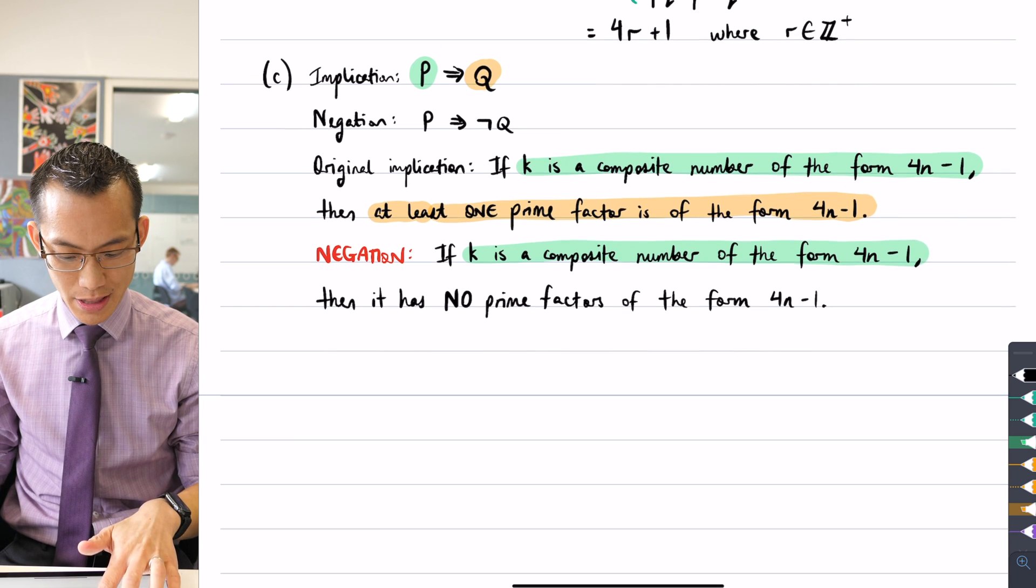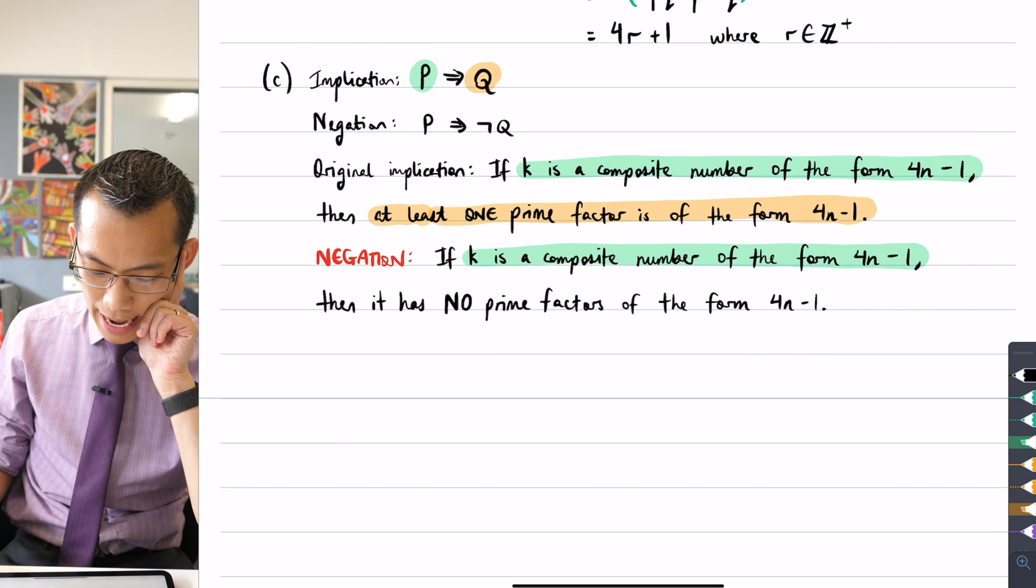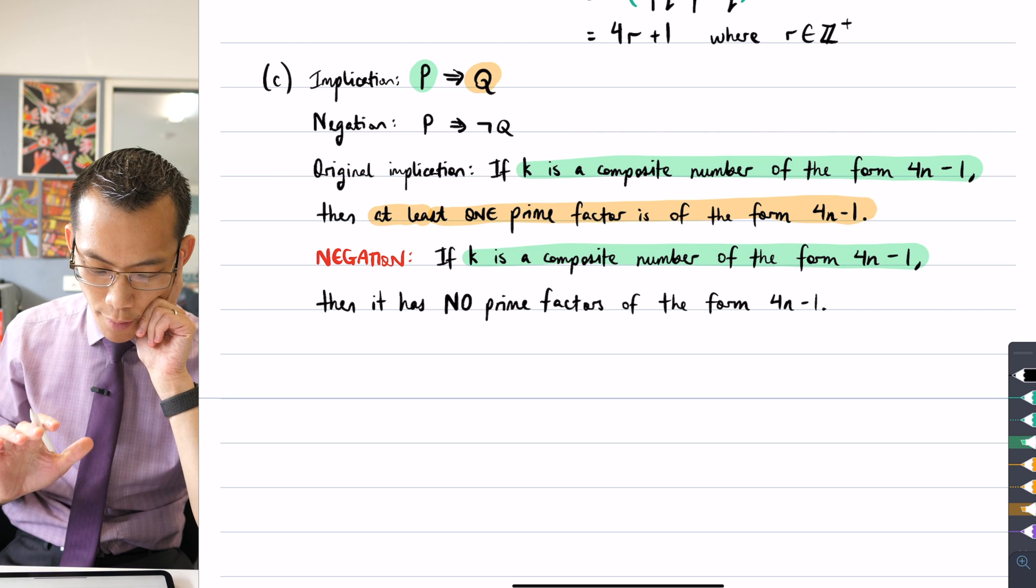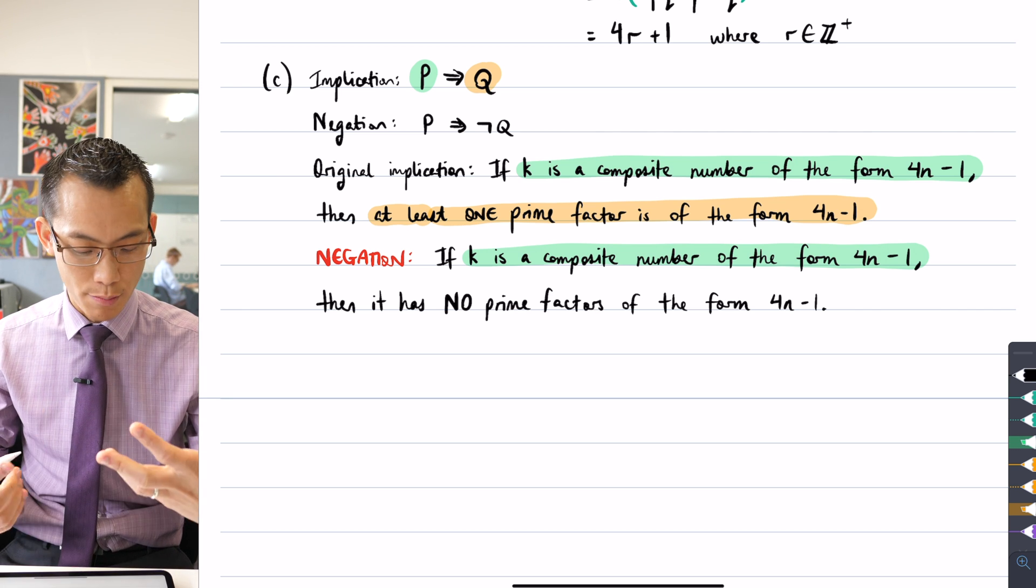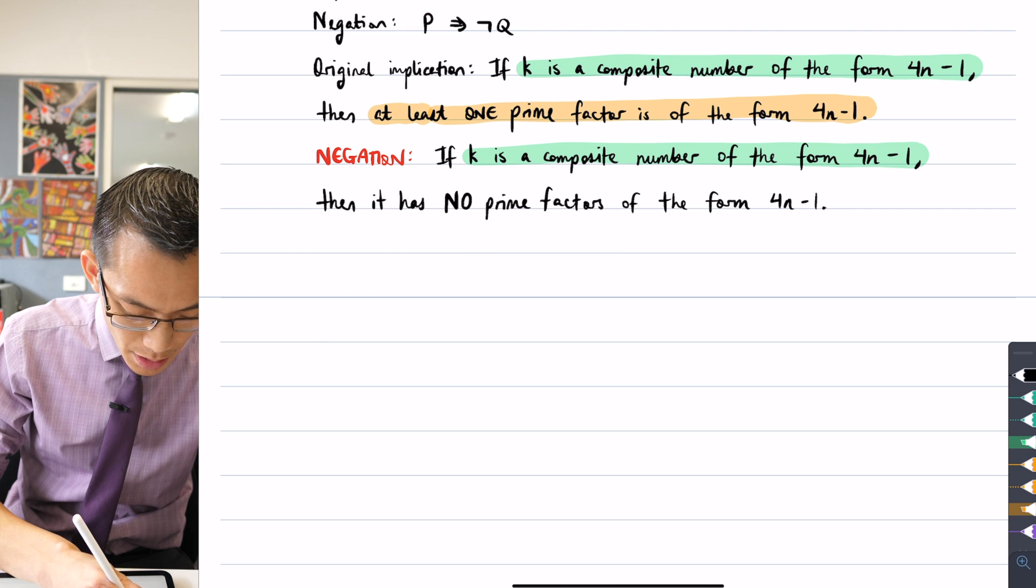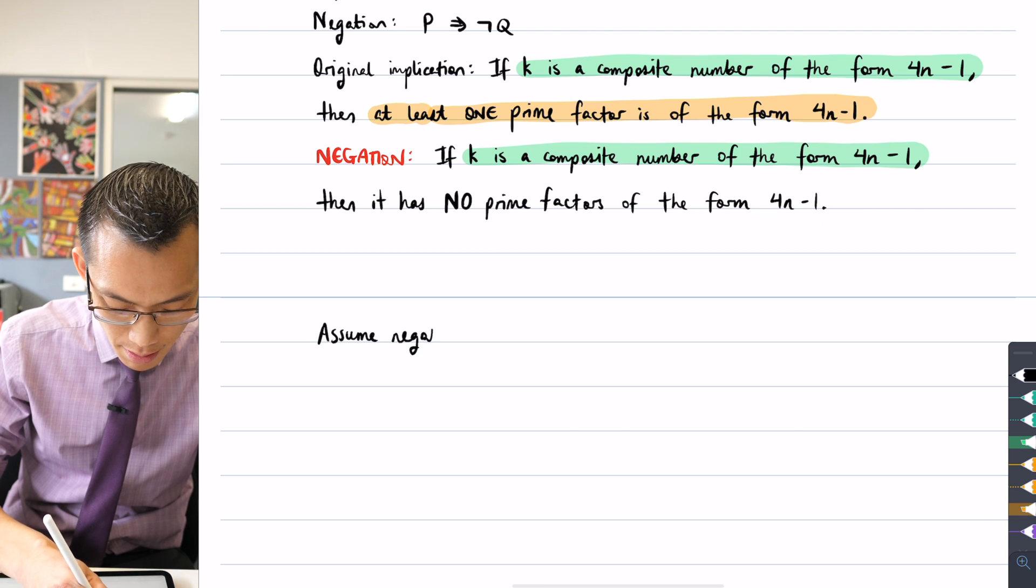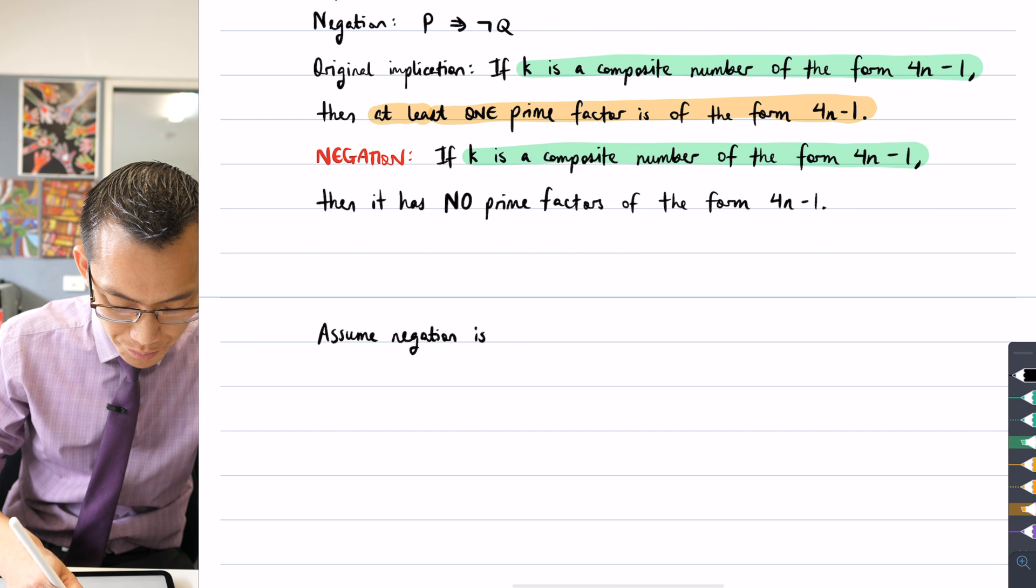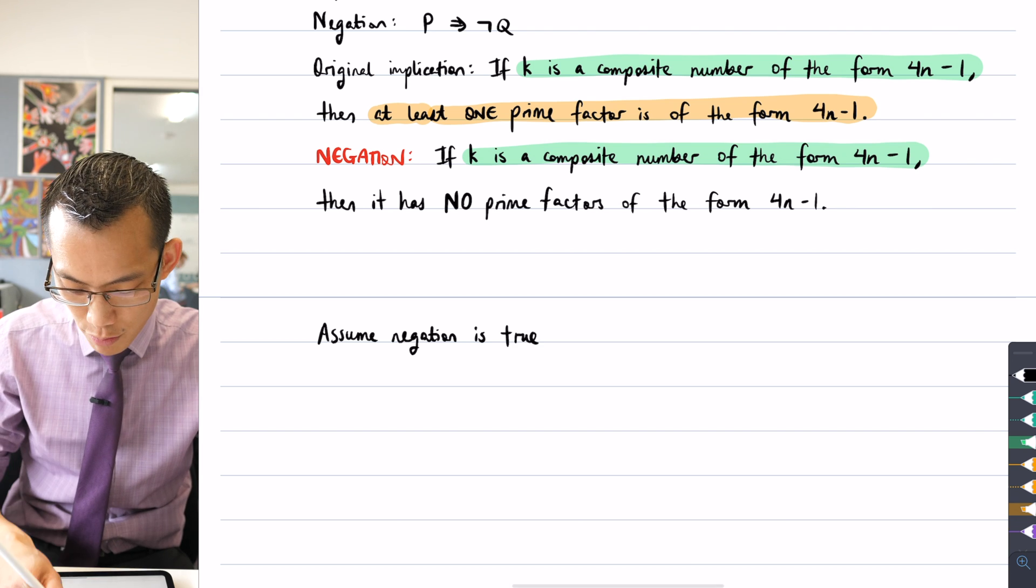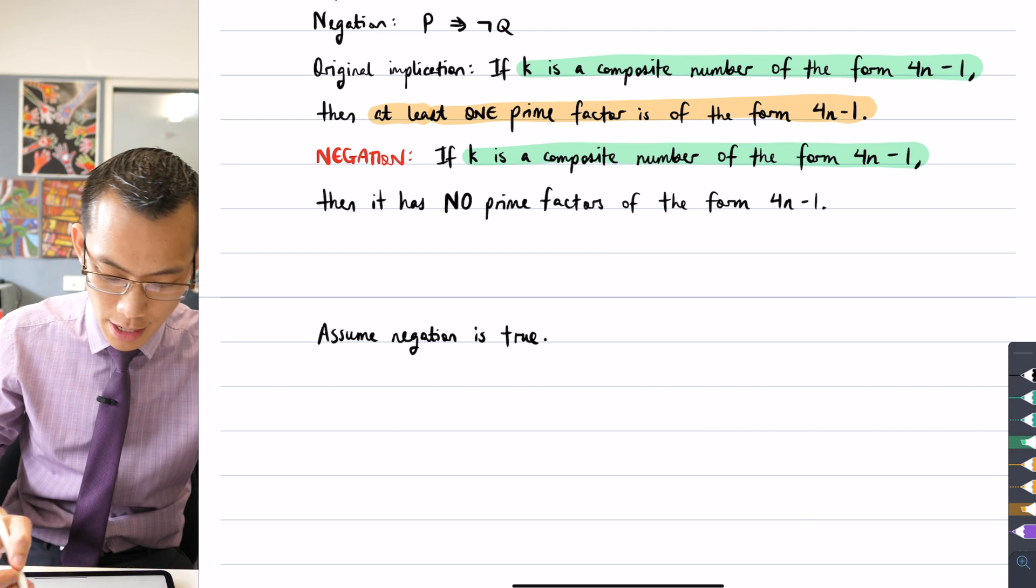All right, so what can we do with this? Well, what I'm going to start with is by having a look at what I know from the negation I'm assuming to be true. So I'm going to say assume negation is true.